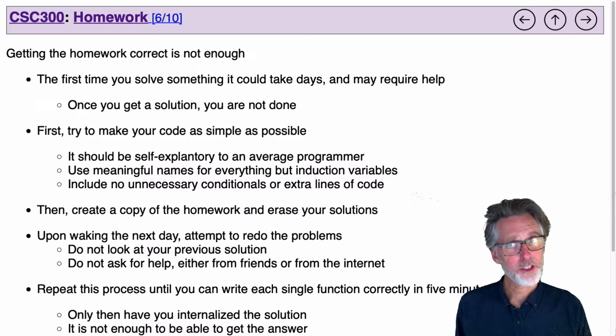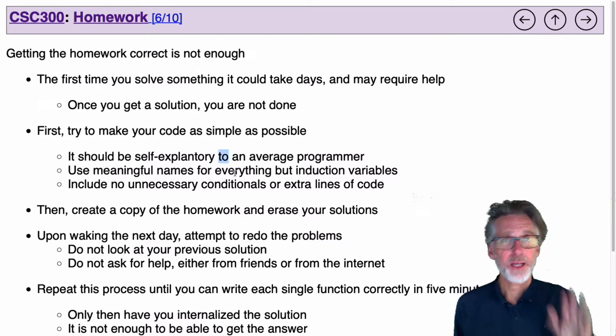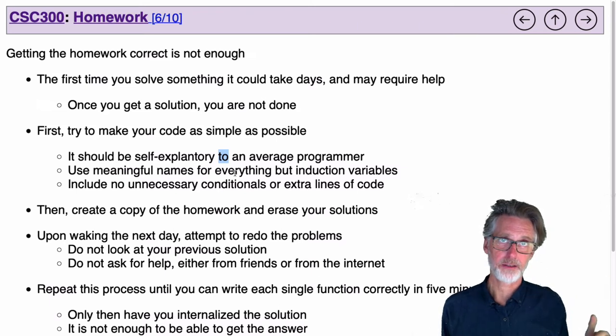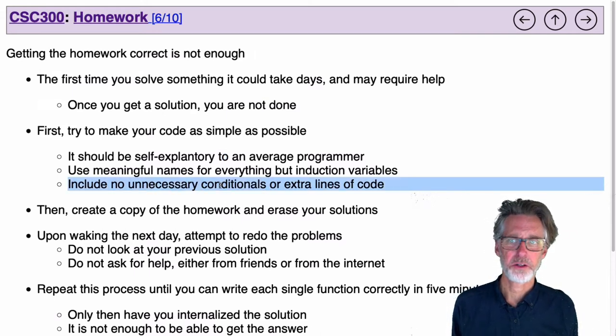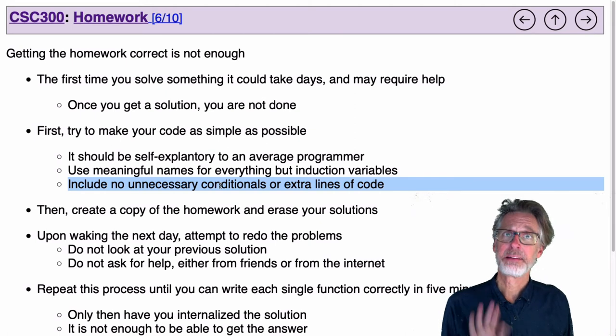So once you've got a solution, you should try to clean up your code as much as possible. Try to make it so it's self-explanatory to any average programmer. Use meaningful names for everything in your program, except maybe induction variables like the iterator through an array or through a linked list. You can call those things I or X, but other variables should have meaningful names. And get rid of unnecessary code. Once you've cleaned up your code, create a copy of it and delete all your solutions. Leave for a day. Come back the next day and try to type them in.